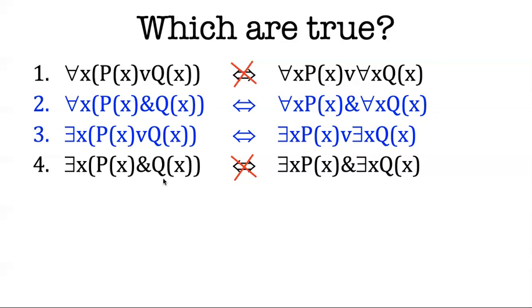Maybe there's a small mouse and a giant cat in our domain. So that's why this one is true. Just because there exists something P and exists something Q doesn't mean there exists something with P and Q.